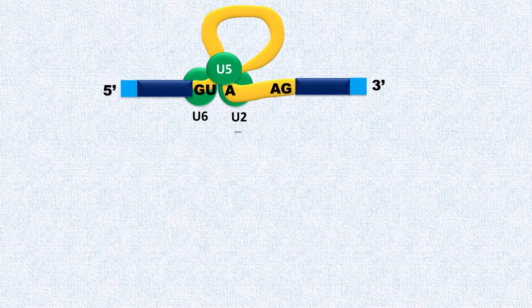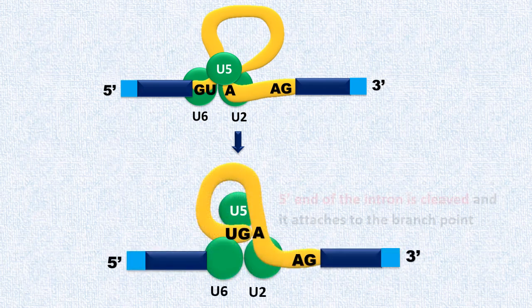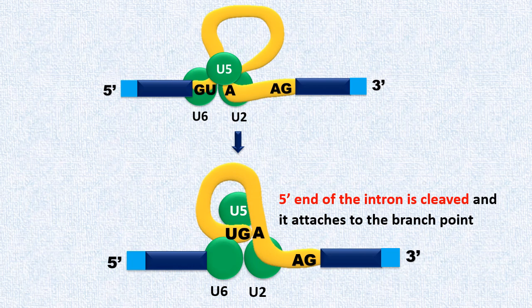In the fourth step, the 5' end of intron is cleaved and it attaches to the branch point, that is to the adenine of the intron.